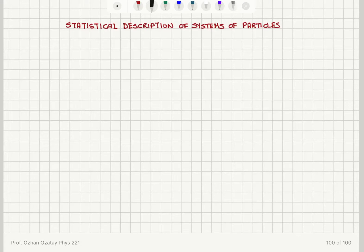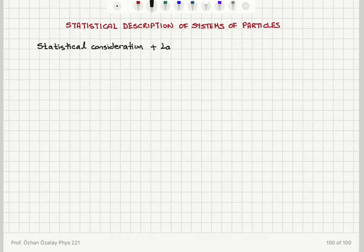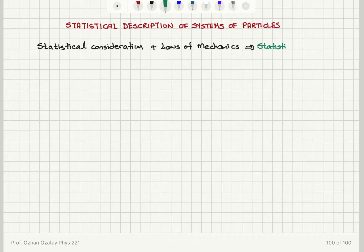We will now start discussing the statistical description of systems of particles. In order to do that, we combine statistical considerations with the laws of mechanics applicable to the particles, and the resulting theory we get is called statistical mechanics.